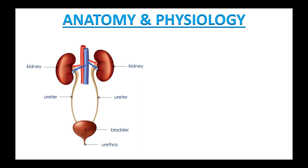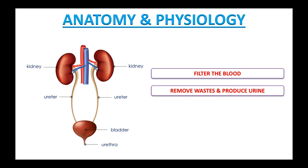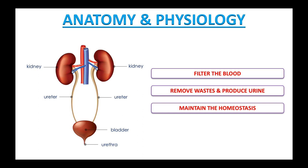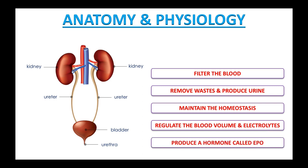Here are the basic functions of the kidneys that you need to know for the exam. The kidneys perform many crucial functions including forming urine, filtering the blood, removing waste and producing urine, maintaining homeostasis, regulating blood volume and electrolytes, and producing a hormone called EPO — erythropoietin. EPO causes the bone marrow to make red blood cells, which carry oxygen to our body. When the kidneys are damaged, they don't make enough EPO, and as a result the bone marrow makes fewer red blood cells, causing anemia.